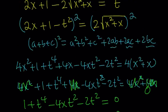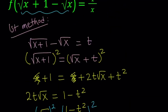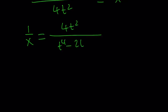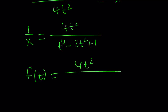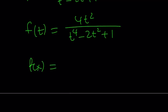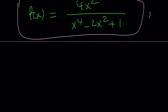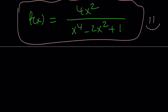We're trying to get 1 over x because f of something equals 1 over x. So 1 over x is just the reciprocal: 4t² divided by t⁴ minus 2t² plus 1. As before, this gives us f(t) equals 4t² divided by t⁴ minus 2t² plus 1. To find f(x), we replace t with x on both sides — and don't worry, those two x's are not the same, we're just reusing the variable. Thank you for watching. Please comment, like, and subscribe. I'll see you tomorrow. Until then, be safe, take care, and bye-bye.